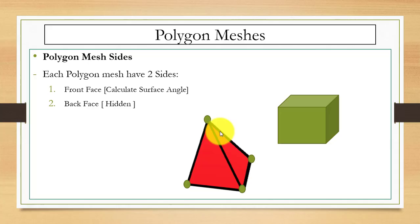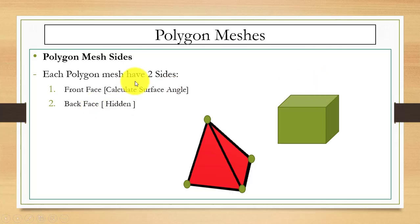For the polygon mesh we have two sides: front and back. You can see this 3D object — the front side is visible and the back side is hidden. The front side is used to calculate the surface angles. Software you can use for creating polygon meshes includes Maya, 3ds Max, and Blender. That's all about this video — if you have any questions, comment below. Thanks for watching.